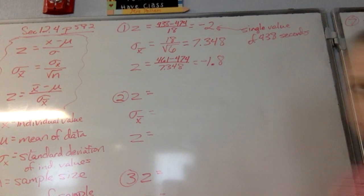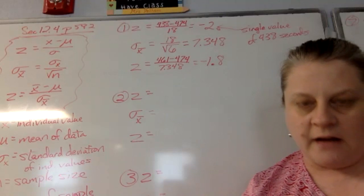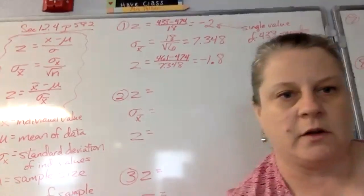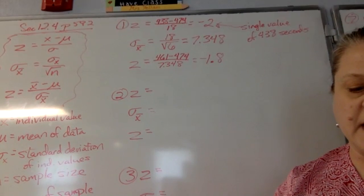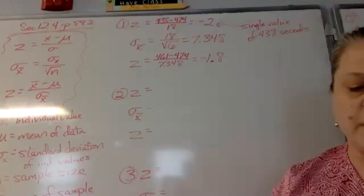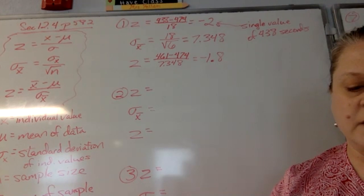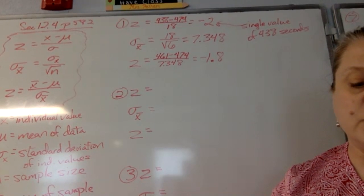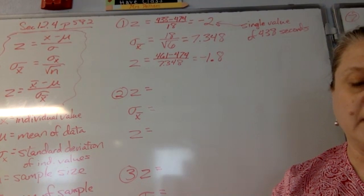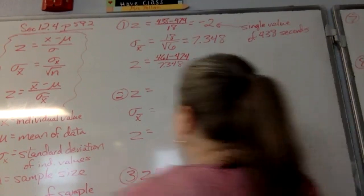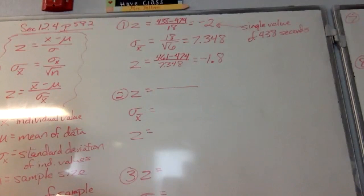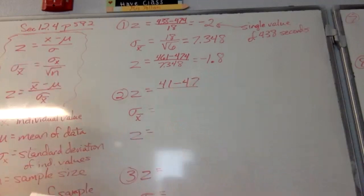Number two goes through the same process, and number three as well. Then for problems seven, eight, and nine we only have two equations instead of three — a little shorter. Number two: the average time for a group of students to finish a test follows a normal distribution where the mean is 47 minutes and the standard deviation is 5 minutes. Compare the z-score of Jenny's time of 41 minutes with 10 students' average time of 46 minutes. Which value is farther from the mean? We start with Jenny's z-score: 41 minus 47, divided by 5.